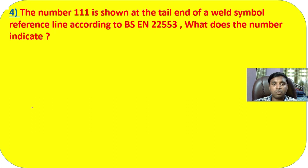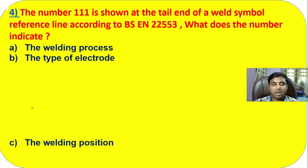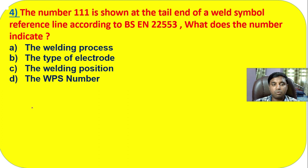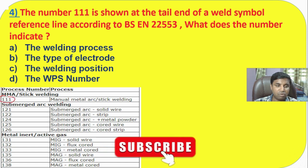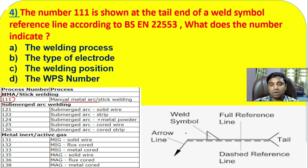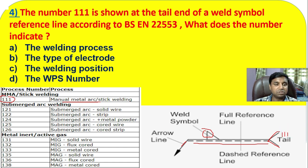Question 4: The number 111 is shown at the tail end of a weld symbol reference line according to BS EN 22553. What does the number indicate? Options: A) the welding process, B) the type of electrode, C) the welding position, or D) the WPS number. In a weld symbol, the arrow line, weld symbol, reference line, and tail end are the key components. If 111 is mentioned at the tail end, it indicates the welding process — manual metal arc welding. So the answer is A.